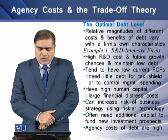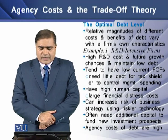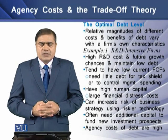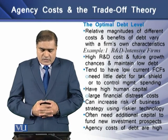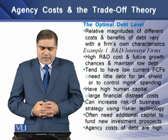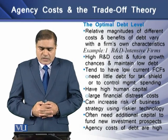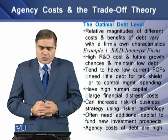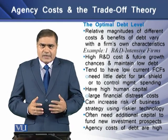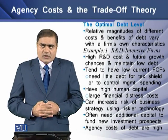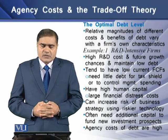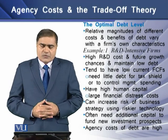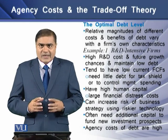The relative magnitude of the different costs and benefits of debt vary with the firm's own characteristics. Take an R&D-based firm as an example. Such a firm has high R&D costs and future growth opportunities, and maintains a low level of debt. These firms tend to have low current free cash flows, need little debt for tax shield benefits, and have a higher amount of human capital, resulting in larger financial distress costs.